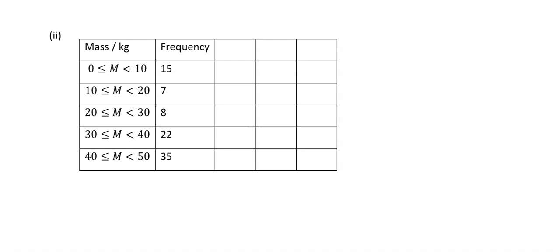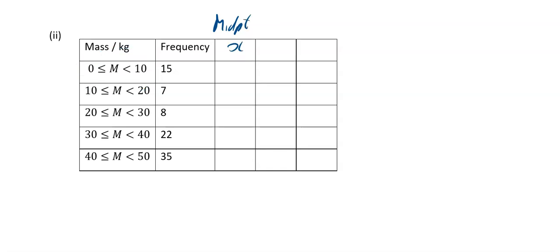Last example for this video — this is one where we have to use our midpoints. It is an estimate of both the mean and the standard deviation we're finding here, because you're making the assumption that anyone in this interval takes the midpoint. The lower boundary of this one is 0 and the upper boundary is 10. So your midpoint is 0 plus 10 divided by 2, giving you 5. Next one gives you 15, next one 25, next one 35, and 45. They were all the same width, which made it nice.